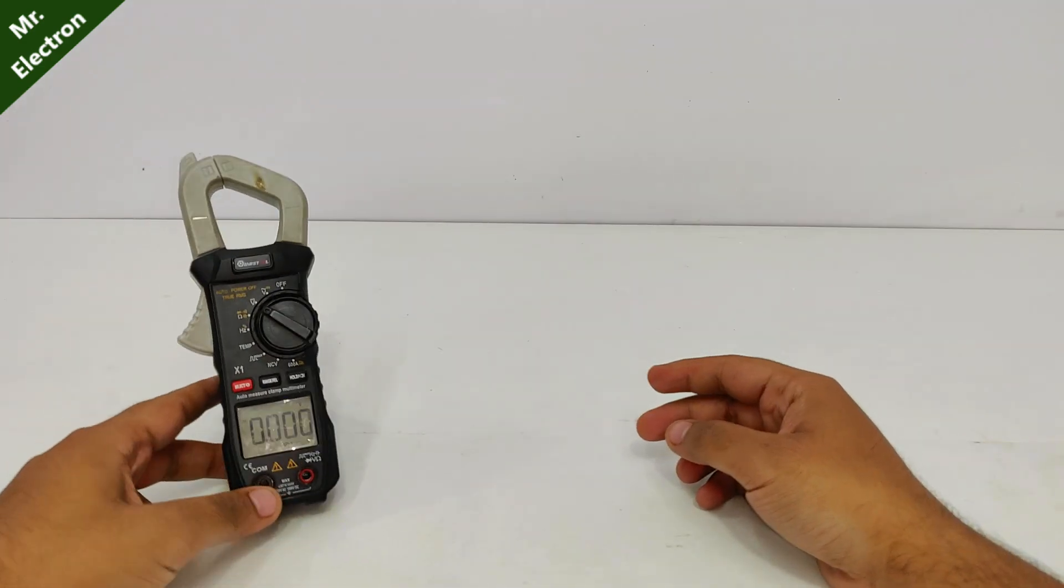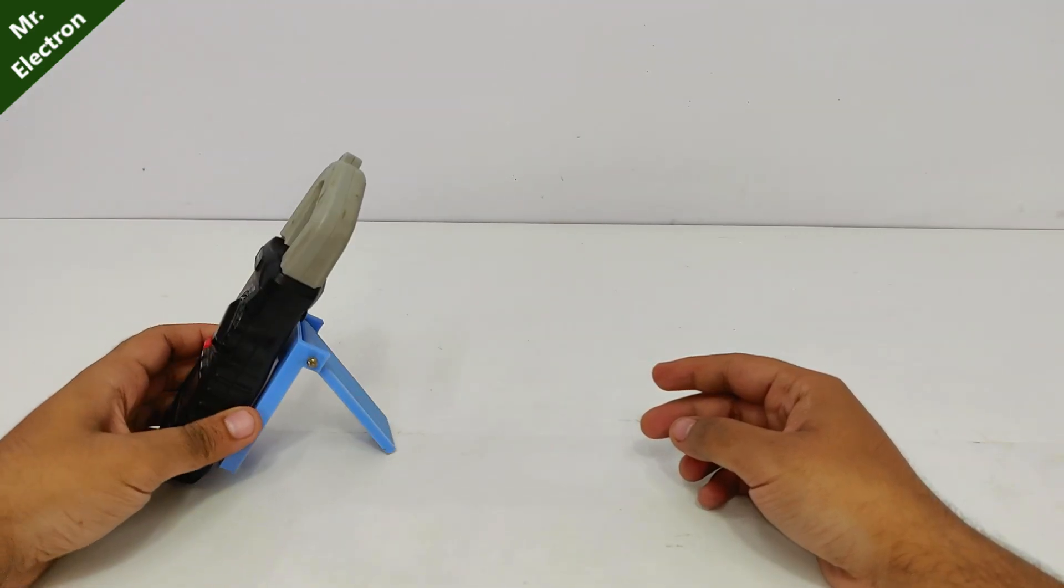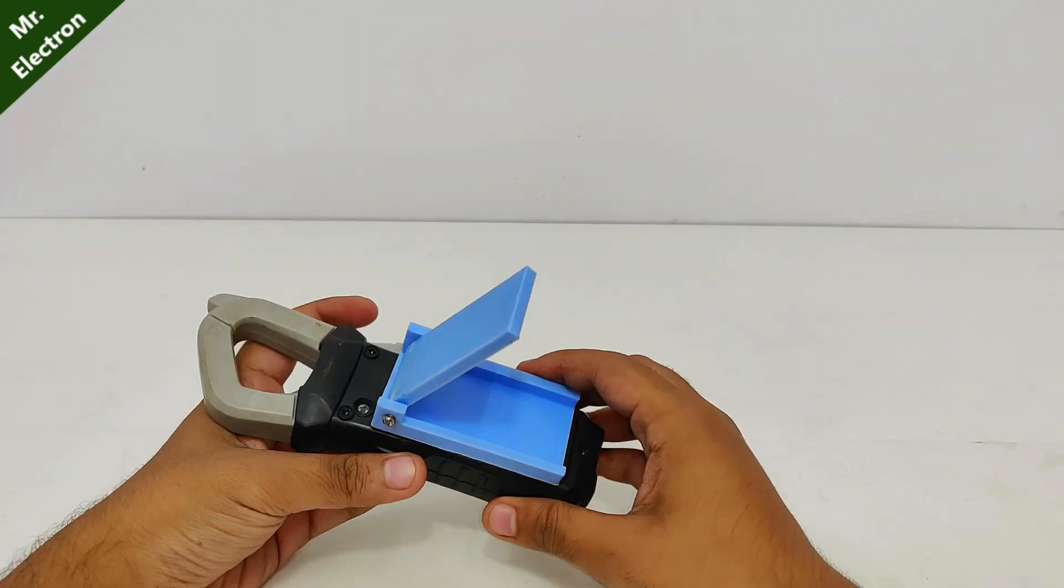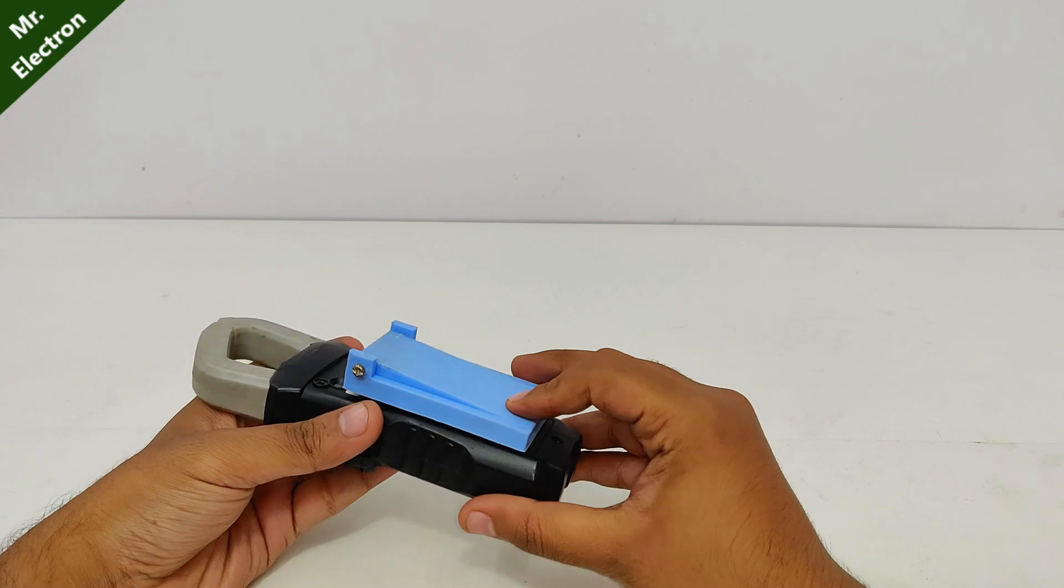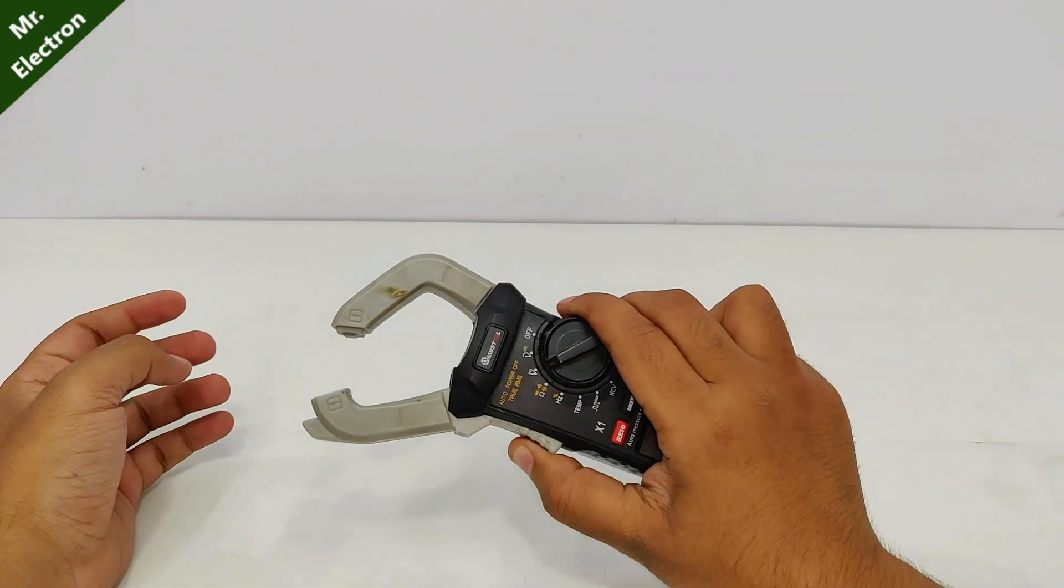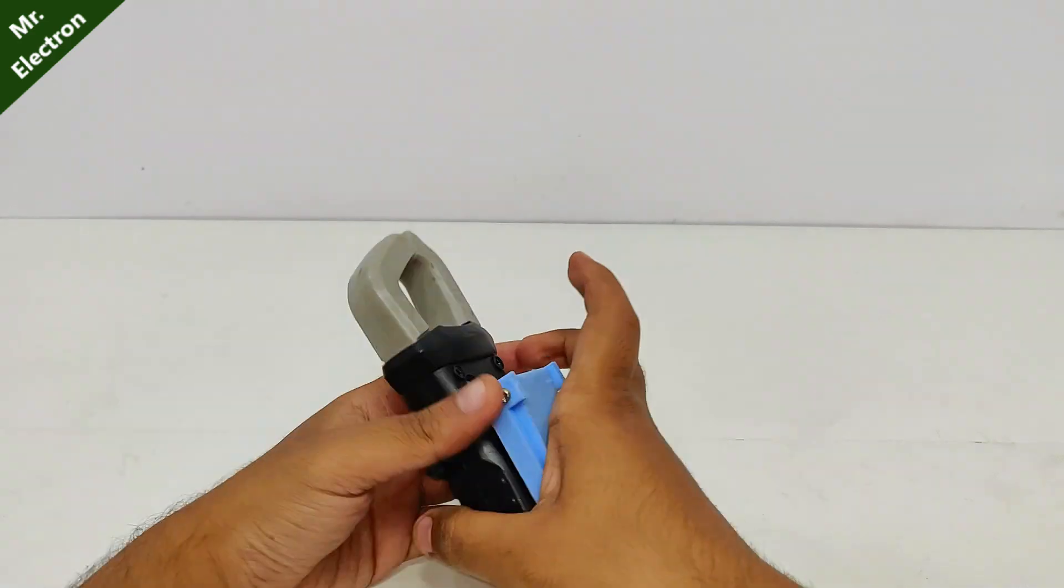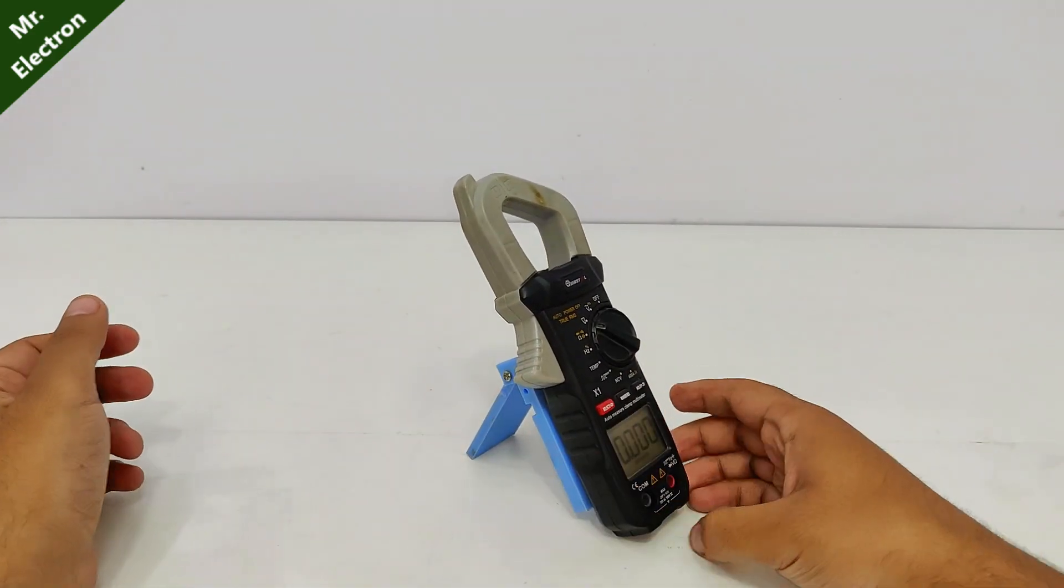So this is how we are going to use it. It's quite simple and easy and the best part is that this stand does not makes this meter bulky. It is still quite handy. You can still use the clamp meter without any problem. And when you need the stand, you just open it and you have it.